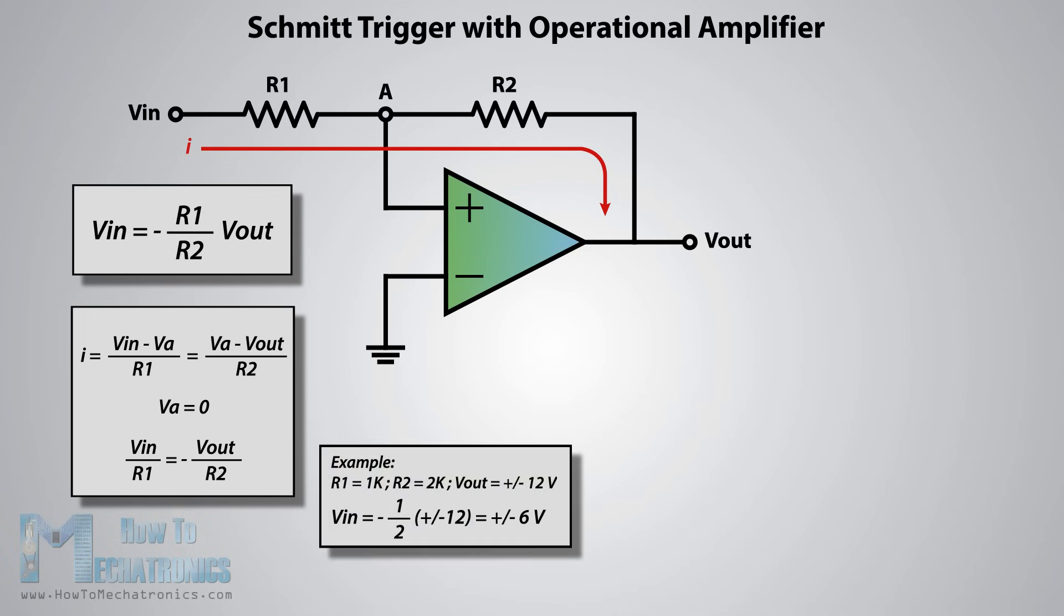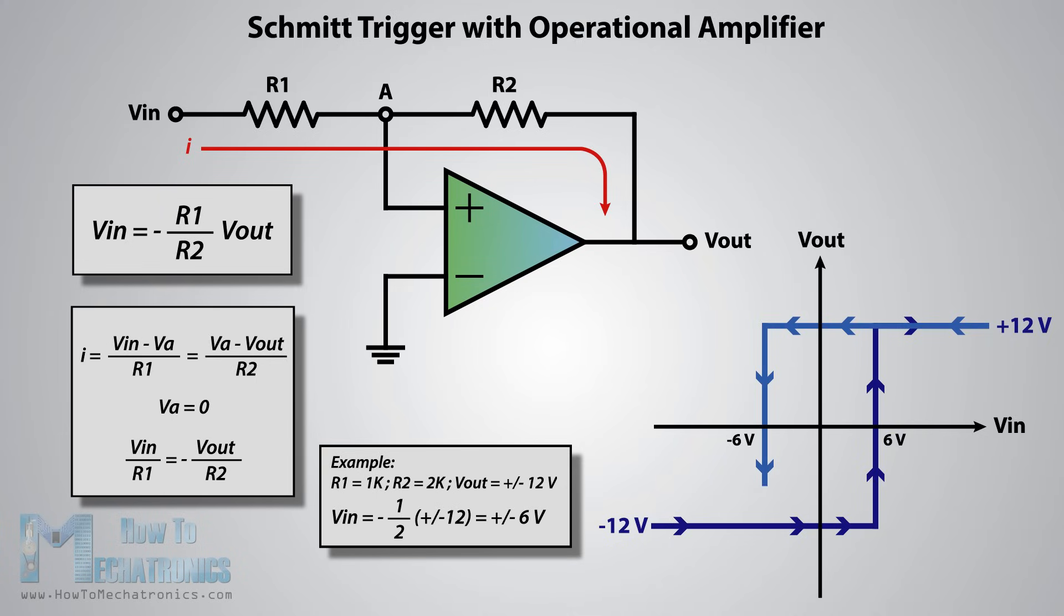For example, if the output is minus 12 volts and the VIN input is negative and rises, the switch from minus 12 volts to plus 12 volts will occur at 6 volts according to the equation and the values of the resistors. Vice versa, when the VIN input is high and declines, the switch from plus 12 volts to minus 12 volts will occur at minus 6 volts.